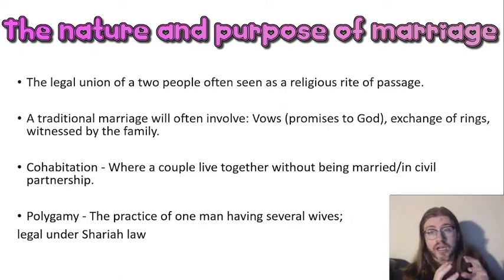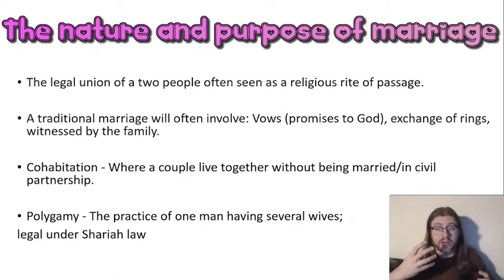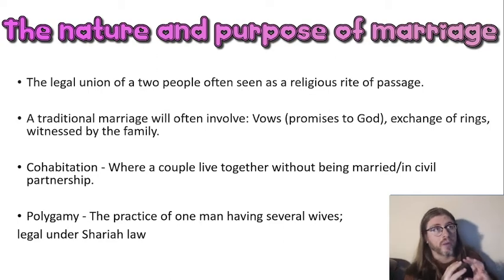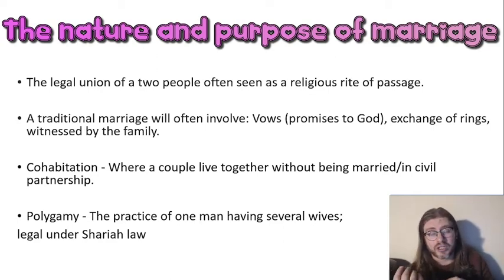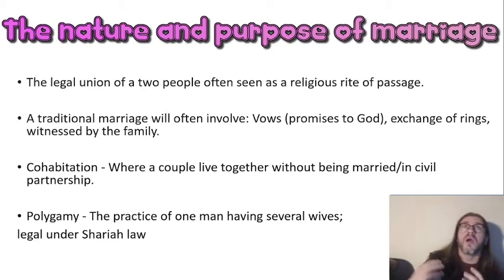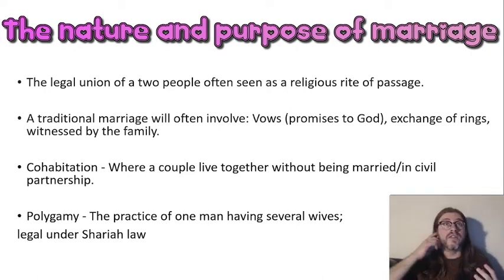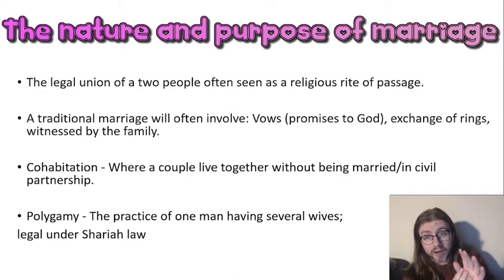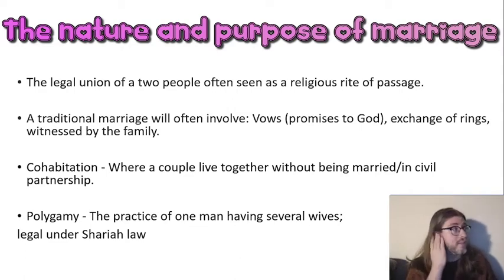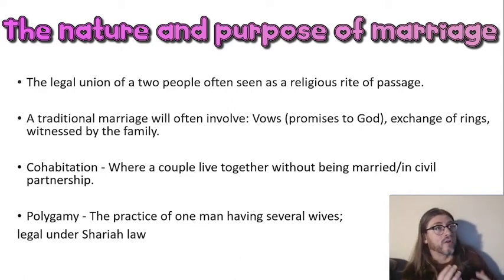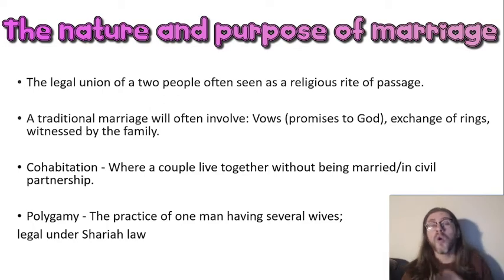Another term you could use in any answer about marriage, especially a 12 mark question about why people wouldn't get married, is cohabitation. Cohabitation is the idea of living together as a couple without being married or in a civil partnership. So if you're a girlfriend and boyfriend and you buy a house together, you are cohabiting.